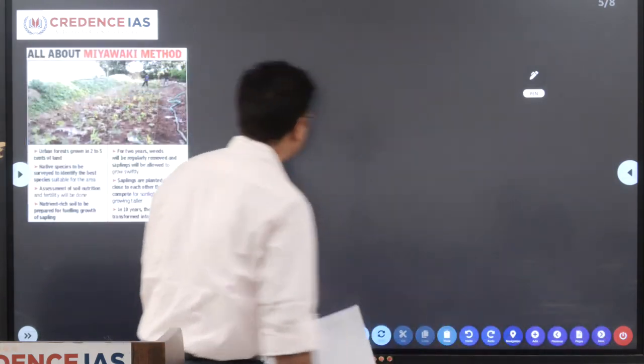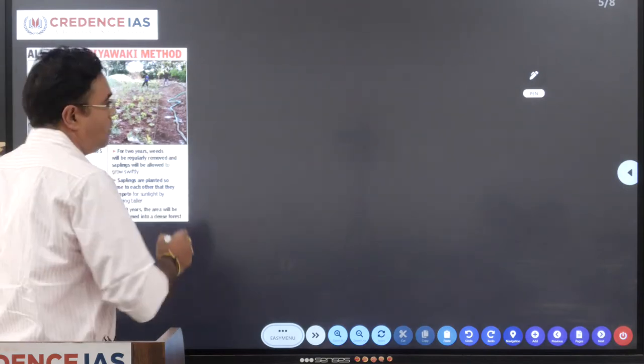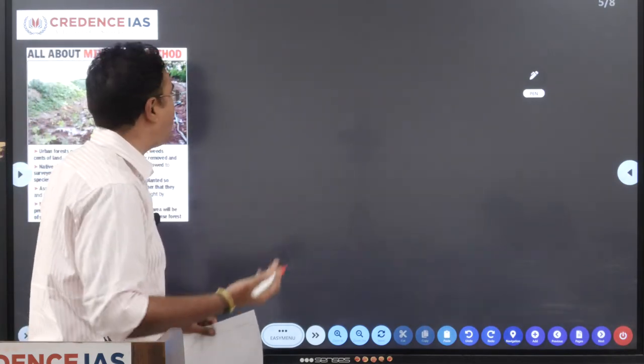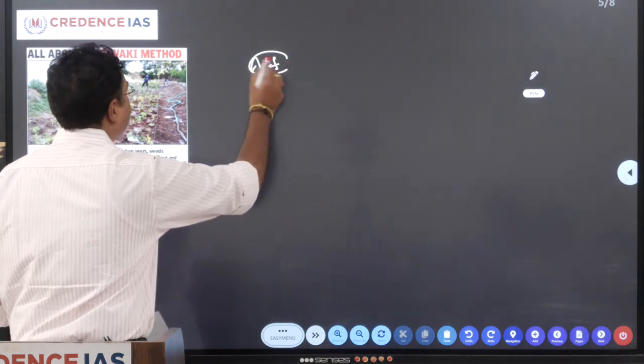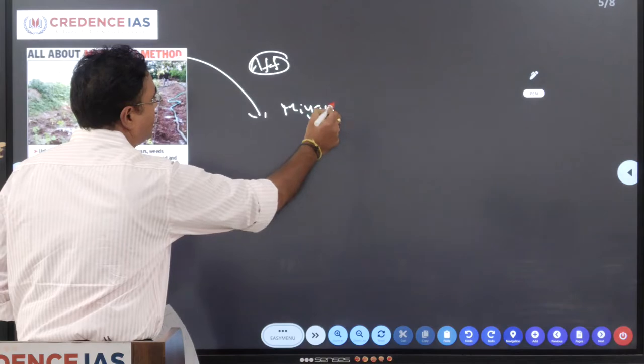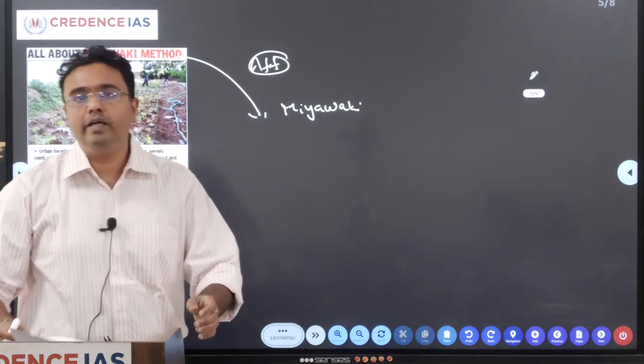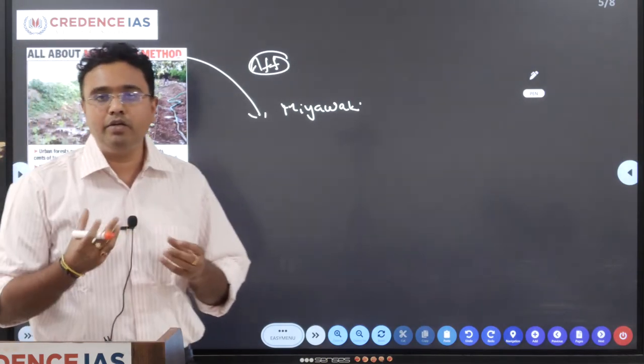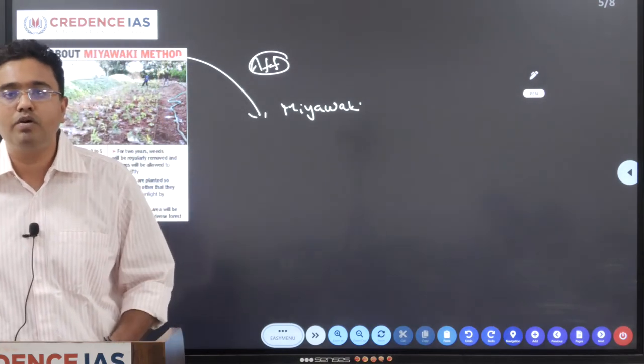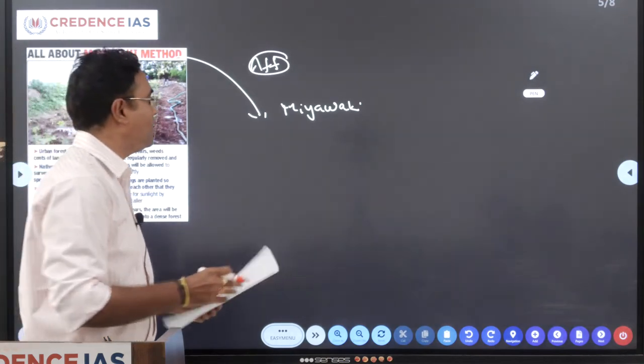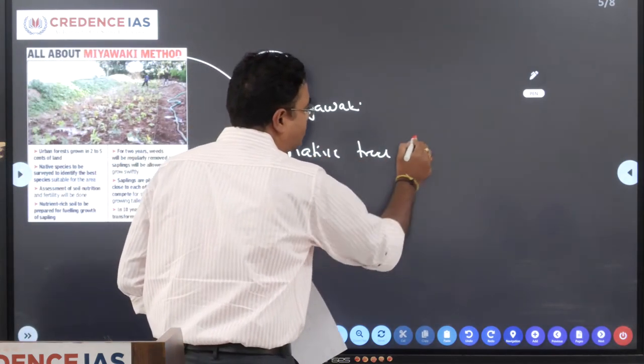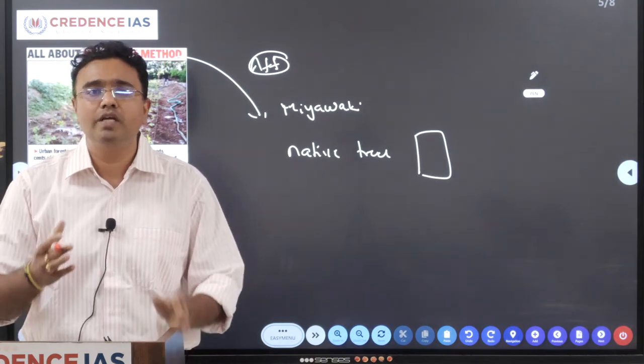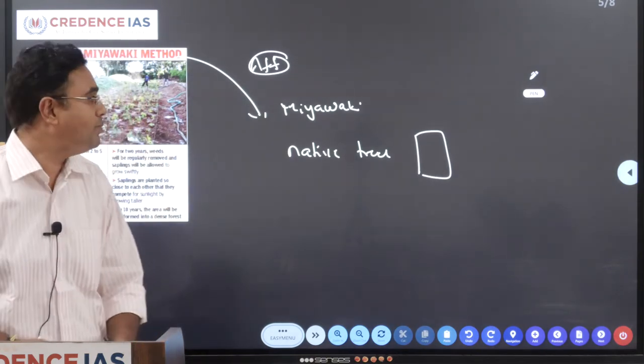Moving on to the next topic, it is Miyawaki method. So why it is in news? Recently BMRCL, Bangalore Metro Railway Corporation Limited, decided to improve the green cover apart from its standard afforestation process, and it is now thinking to shift into the Miyawaki method. This method is designed by a Japanese ecologist and biologist by name Akira Miyawaki, who gave a unique concept of improving the green cover in urban areas. He focused on developing native intensive native trees on a small patch of land, and he gave an idea of cultivating the dense forest in a small local area or patch of land using majorly the native trees.